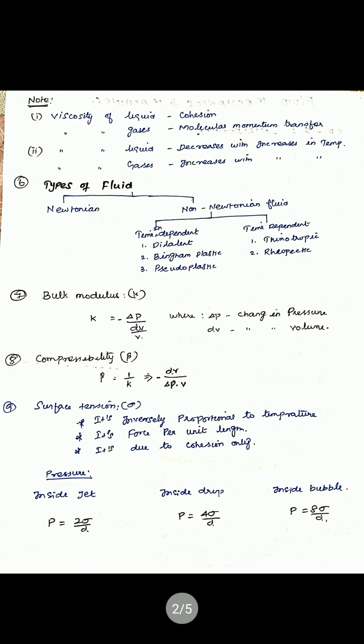Dilatant fluid examples: butter, quicksand, sugar solutions. Bingham plastic fluid examples: sewage sludge, drilling mud, toothpaste. Pseudo-plastic fluid examples: paper pulp, rubber solution, lipstick, paint, blood. Time-dependent fluids: thixotropic fluid — viscosity decreases with time, examples are printer ink and enamels. Rheopectic fluid — viscosity increases with time, examples are gypsum solution in water and bentonite solution.